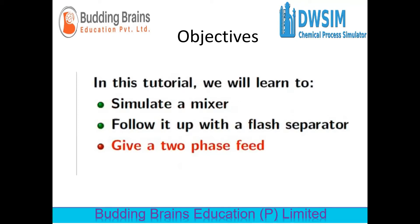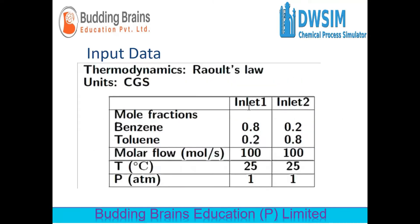The objectives of this tutorial are to simulate a mixer, to follow it up with a flash separator, and to give a two-phase feed. For this simulation, the thermodynamic package given to us is Raoult's law and the units will be in CGS. Benzene and toluene are the compounds required, and the following molar flow rates, temperature, and pressure values will be used.